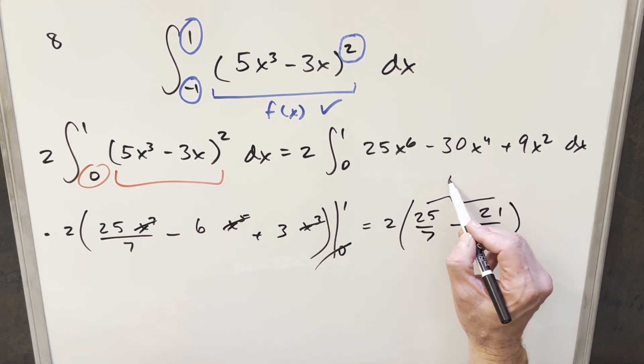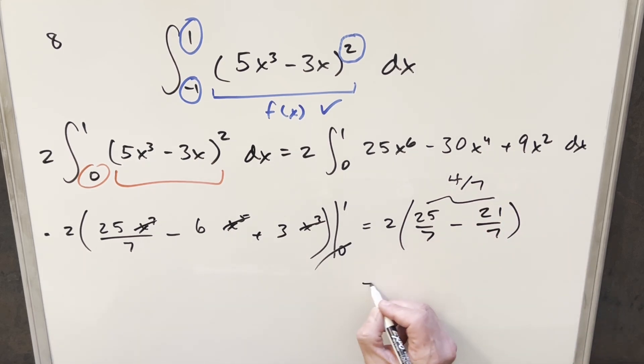Putting this together, this is going to become 4 over 7. Multiplying 2 times 4 over 7, we get our final solution of just 8 over 7.